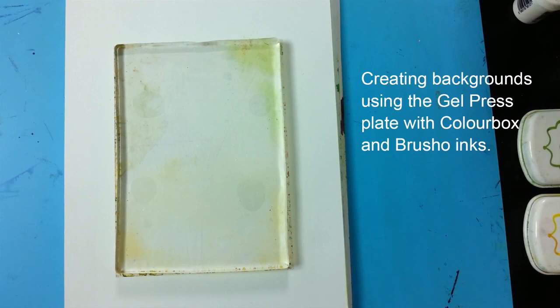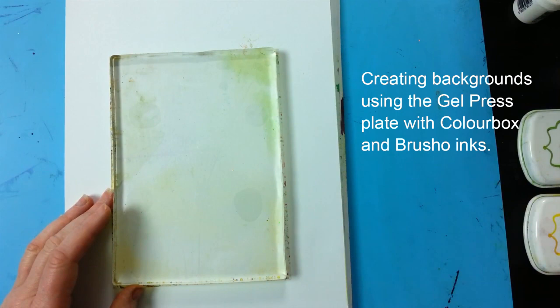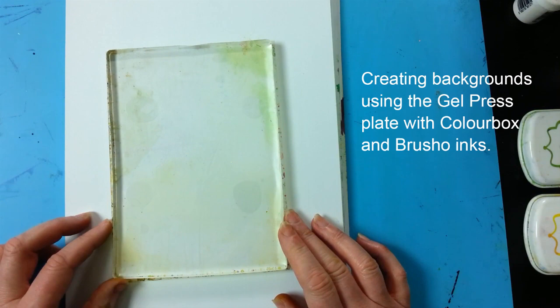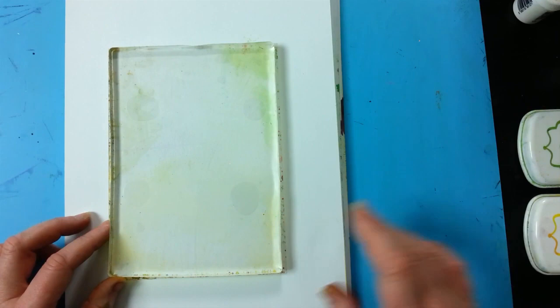I was having a play the other day with a jelly plate, Colorbox Brushos, fan brush, brayer and came up with some really beautiful results. I really think that you're going to love this, it's fascinating how they react together giving you a really gorgeous organic background.